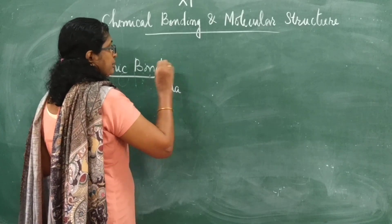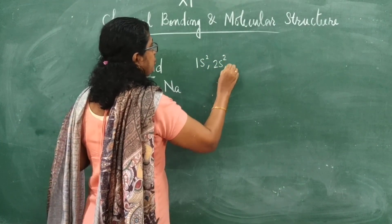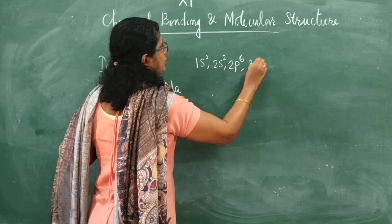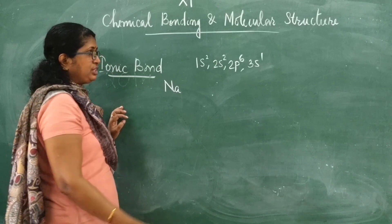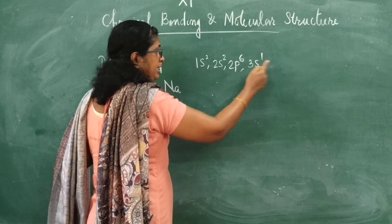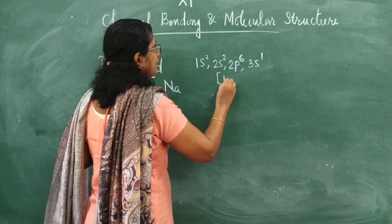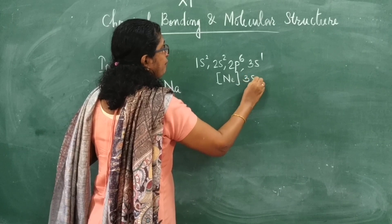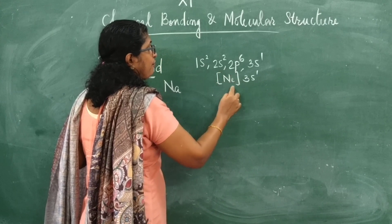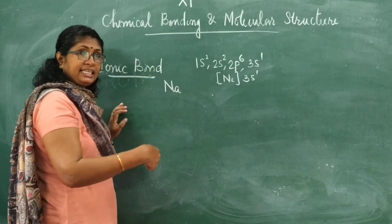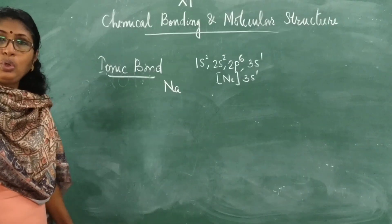For example, sodium has the configuration 1s², 2s², 2p⁶, 3s¹ — 11 electrons total. If it loses that one electron, it will have the configuration 1s², 2s², 2p⁶ — the configuration of neon, the nearest inert gas. So sodium will always try to lose one electron.